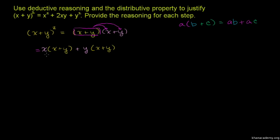Using the distributive property on each part: x times x plus x times y, then y times x plus y times y. This gives us all four terms when we expand the expression completely.